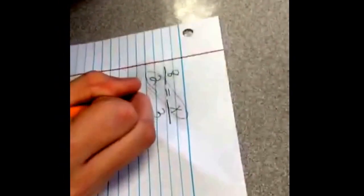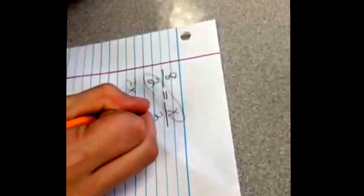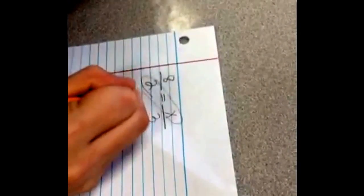And then you cross multiply and you solve for x. 2 times x is 2x, and 8 times 3 equals 24. You divide by 2 on each side, and 2 goes into 24 twelve times, so x equals 12, and that's your answer.